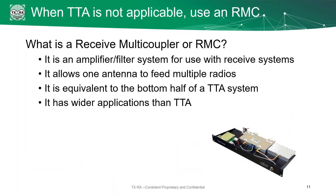Sometimes we don't want to use a TTA — usually when there's not very much line loss, in particular if your antenna is fairly close to your equipment shelter. So instead of using a TTA, we're going to use what's called a receive multi-coupler. The multi-coupler is an amplifier and filter system for use with receive signal systems. It allows one antenna to feed multiple radios, the same as the TTA does — it's equivalent to the bottom half of the TTA. The difference is that it doesn't have a tower top box, but it does have wider applications than the TTA.